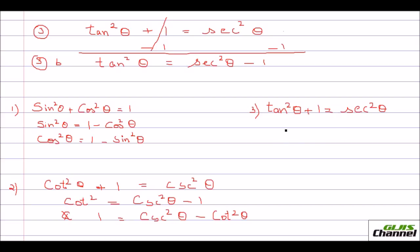From the third identity, we derived tan²θ = sec²θ − 1 and 1 = sec²θ − tan²θ.